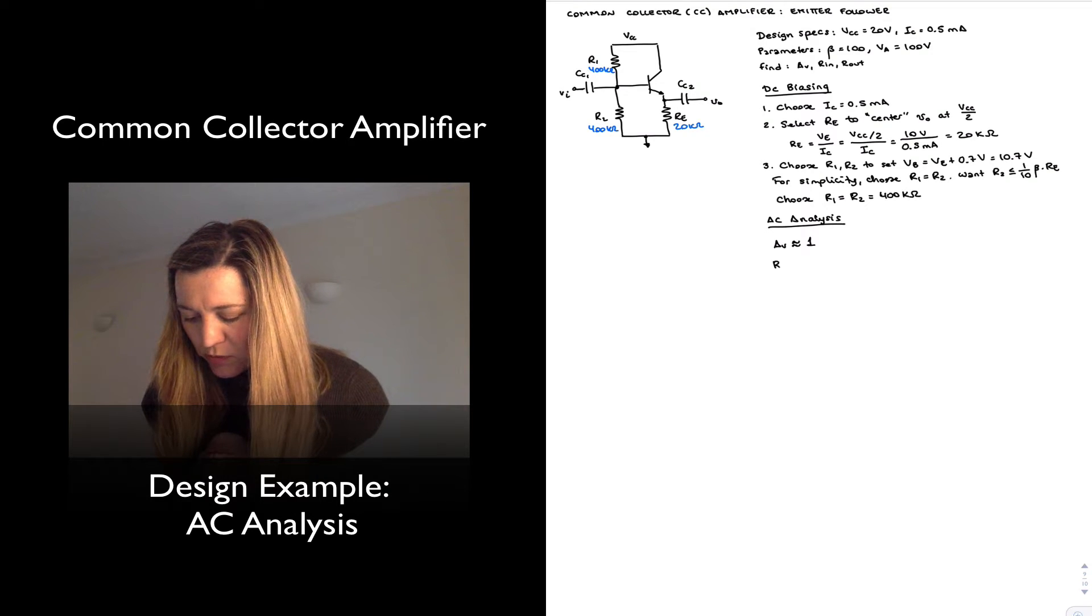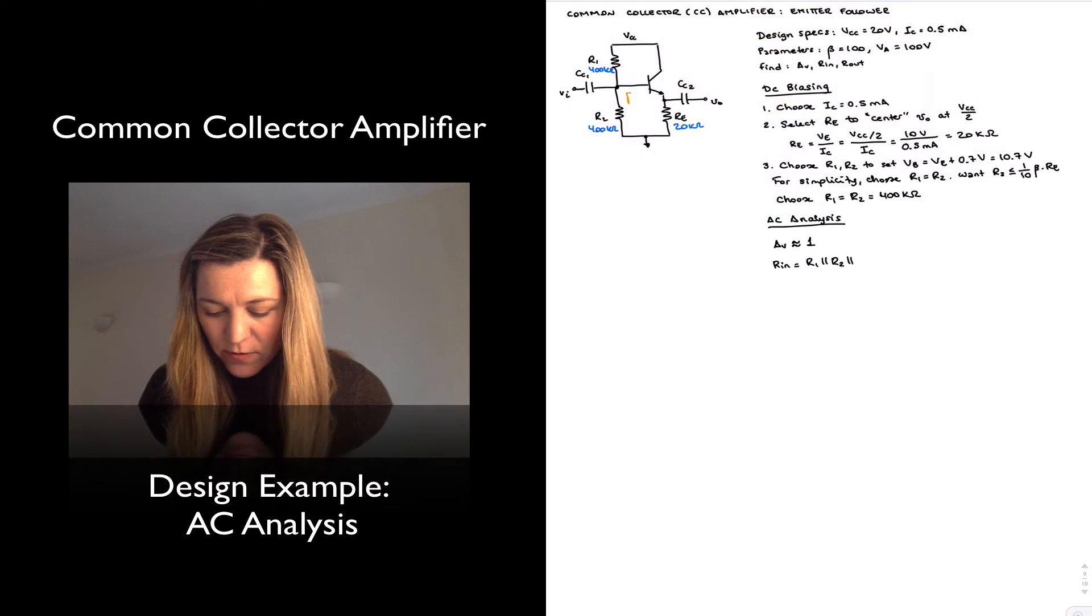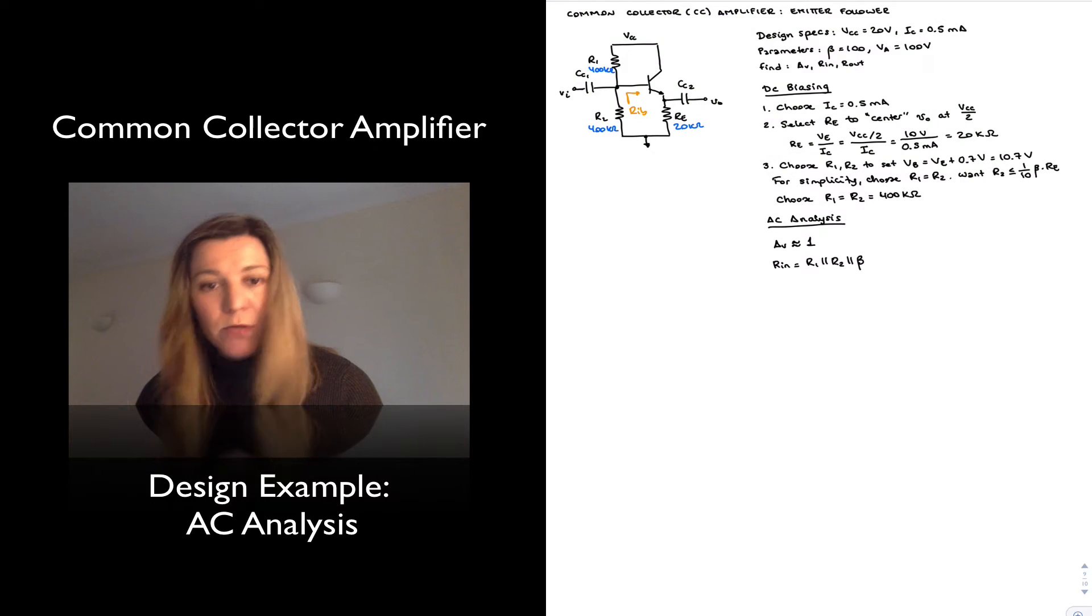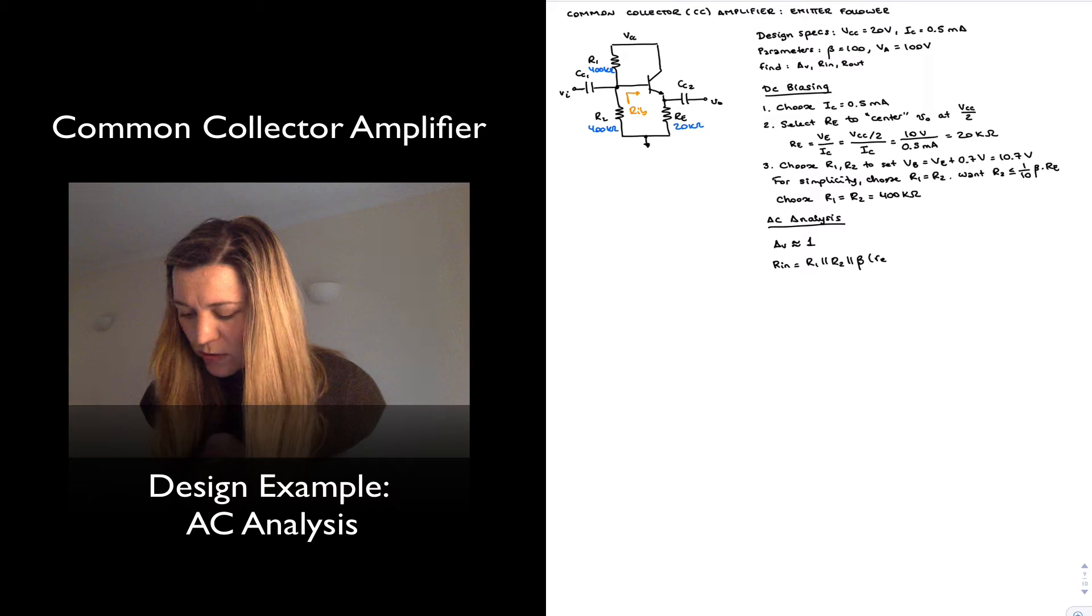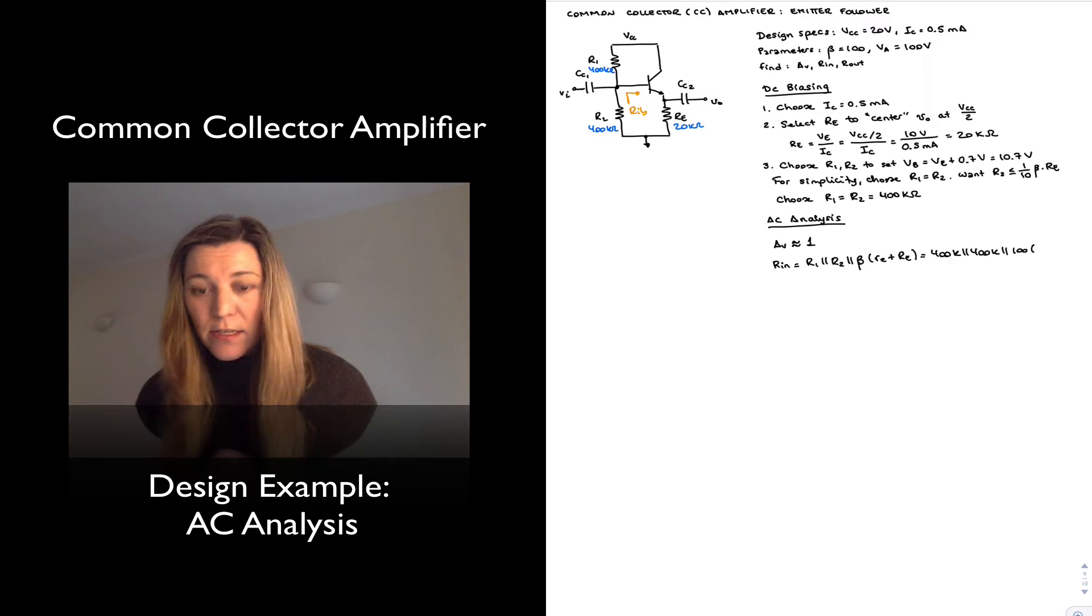My input resistance is going to be equal to R1 in parallel with R2 in parallel with Rib, the resistance looking into the base of the transistor, which by the reflection rule is going to be equal to beta times the overall resistance connected to the emitter, so beta times little RE plus capital RE. This gives me 400k in parallel with 400k in parallel with 100 times, and little RE we haven't calculated just yet.